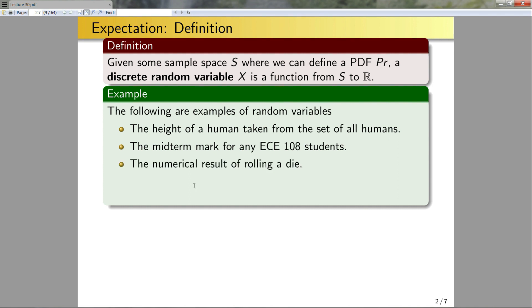Next, the numerical results of rolling a die. So a die, when I roll it, it comes up with a number. I can define probability density functions over the sample space of the results of rolling a die. Therefore, this would be a discrete random variable.